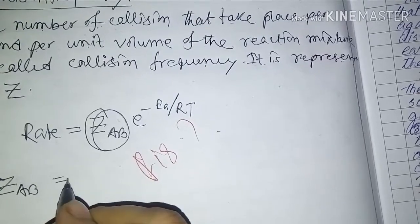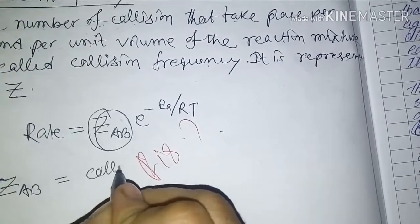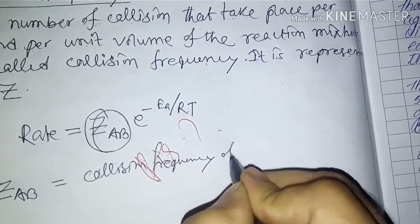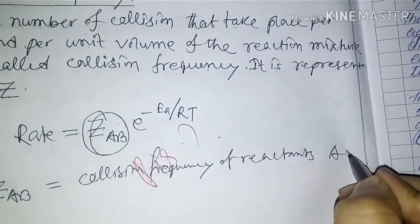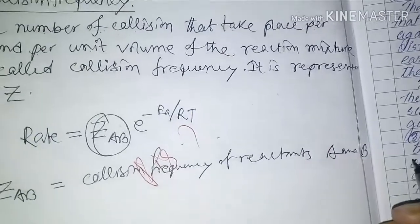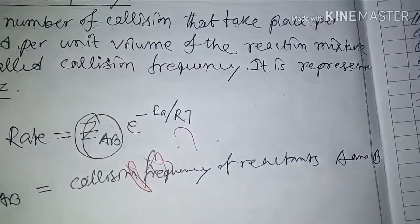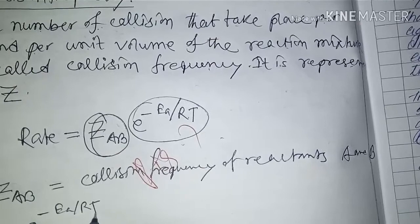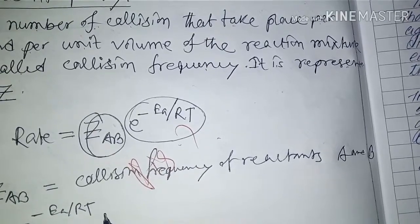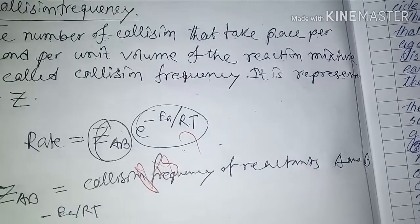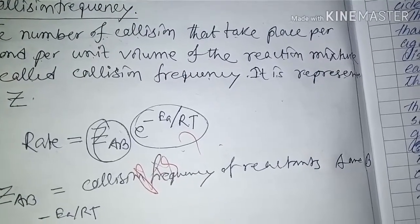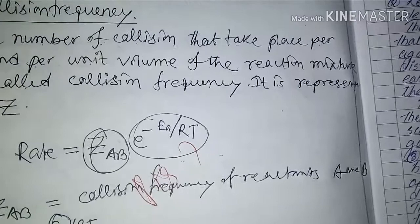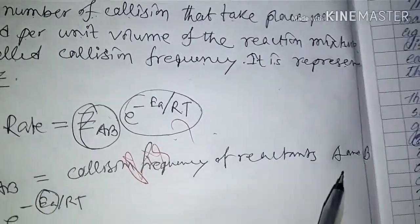The term e^(-Ea/RT) represents the fraction of molecules with energy equal to or greater than the activation energy Ea, where Ea is the activation energy.